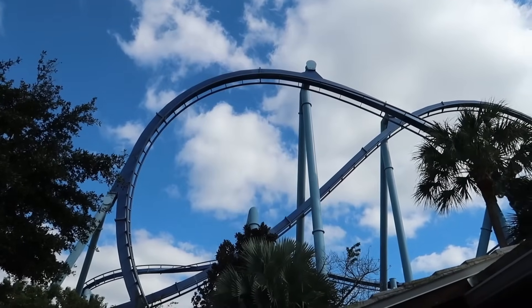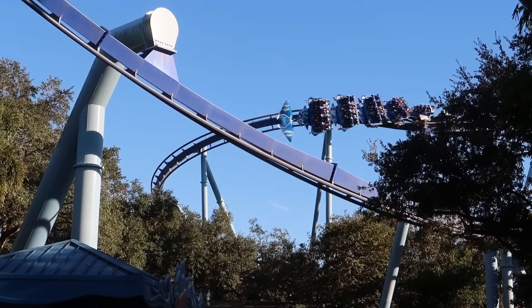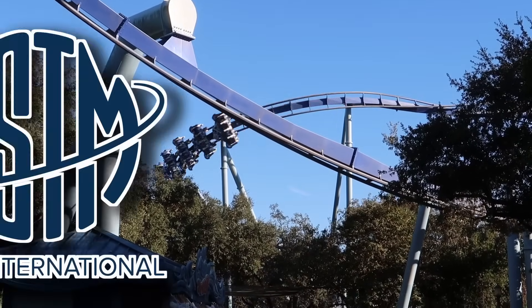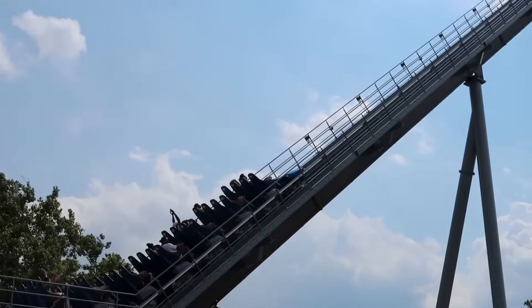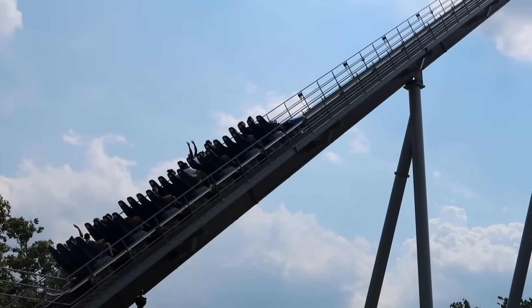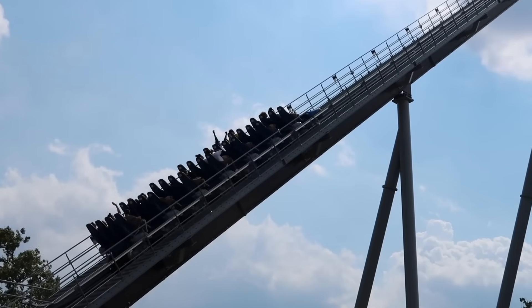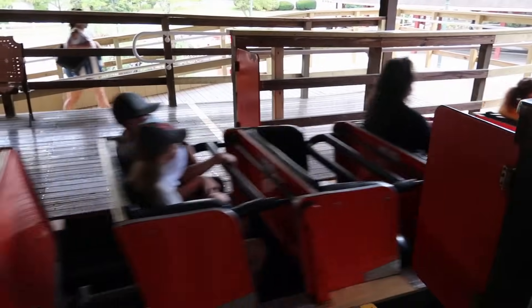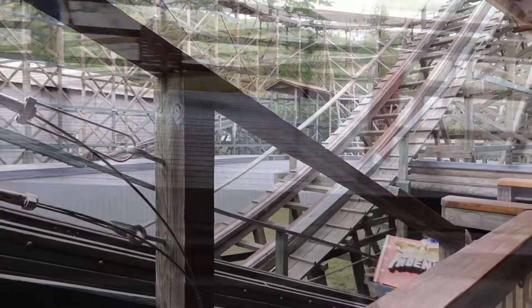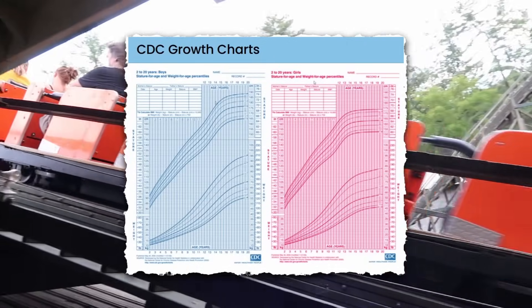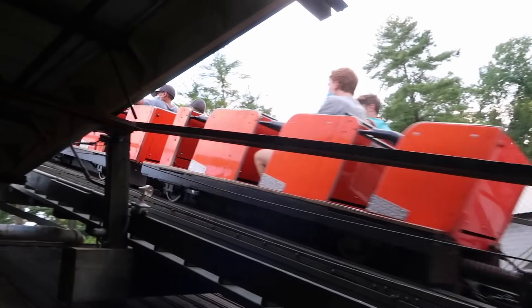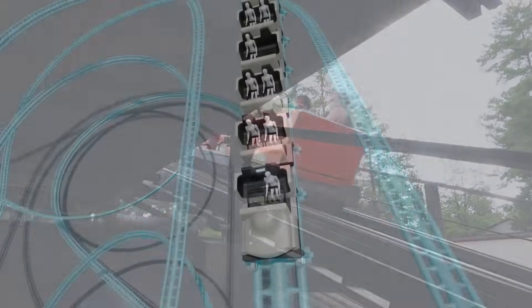Manufacturers use height requirements to define the minimum size allowed for riders. These requirements are determined using international standards for amusement ride design, such as those set by ASTM F24 and ISO standards. In general, restraint designs are based on the dimensions of the average rider. These dimensions are usually derived from data sources like the CDC, which creates and continuously updates a growth chart tracking the average height and weight of children. This data is factored into restraint design.